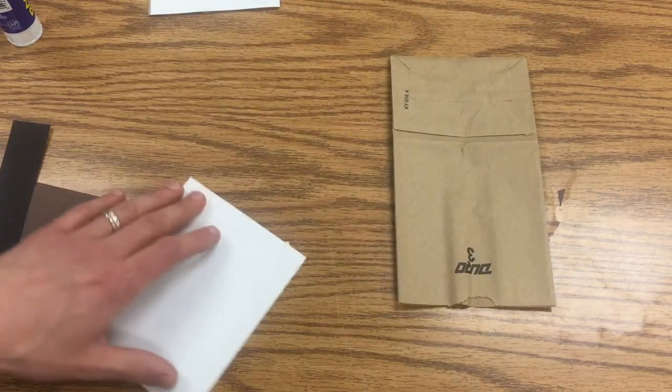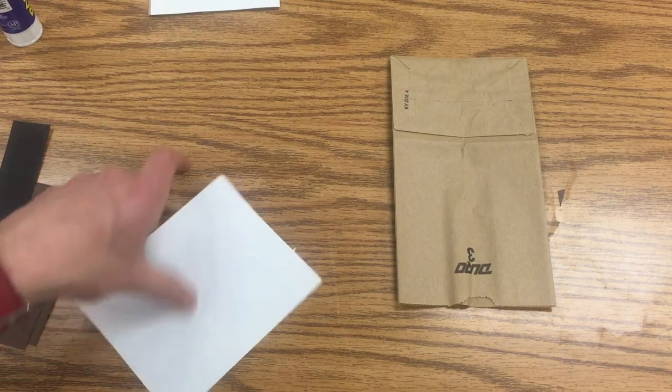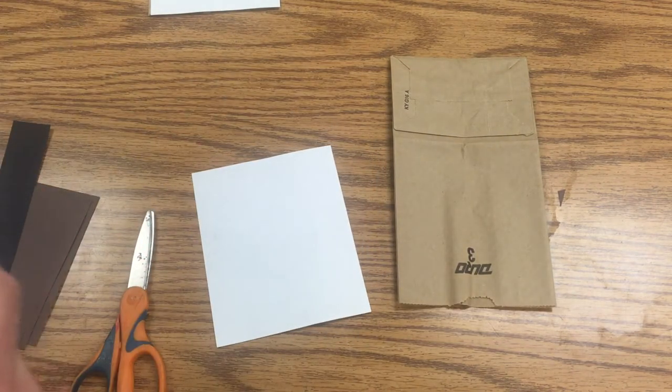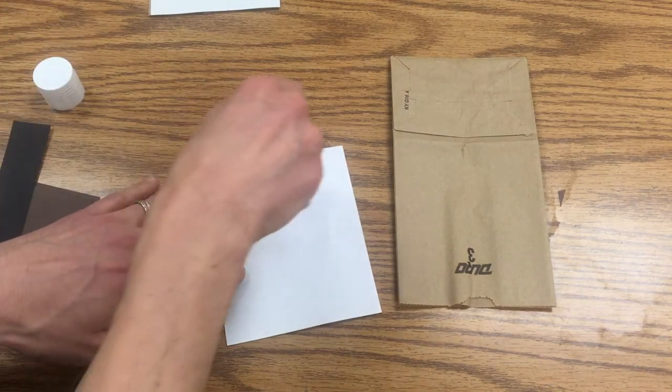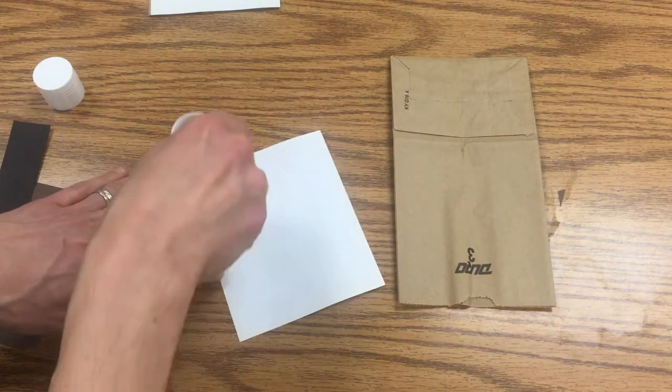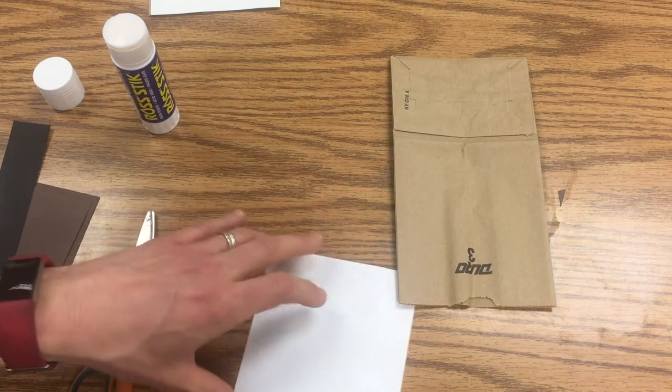So we're gonna take a paper bag and get this white rectangle. You're just going to turn it over and put some glue around the edges of it and put that on the front.